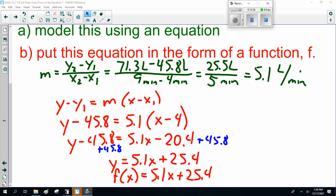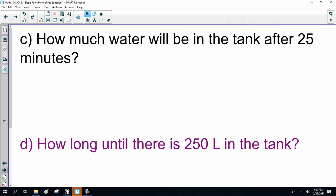Okay, ladies and gentlemen. I got a slope of 5.1 liters per minute, pumping in, so the volume is increasing. Now, I arbitrarily chose the first point, four minutes and 45.8 liters. I got y equals 5.1x plus 25.4. I hope I got it right. It's embarrassing when I miss mistakes in front of you guys. f of x is 5.1x plus 25.4.